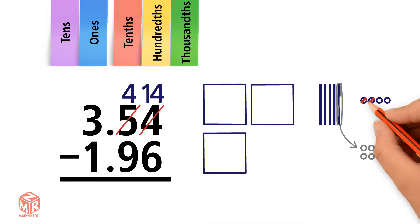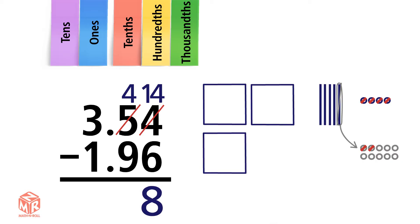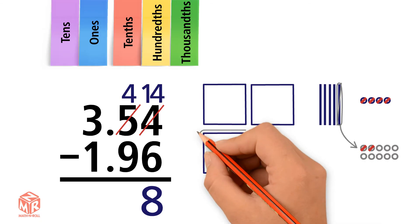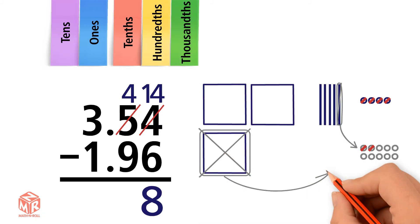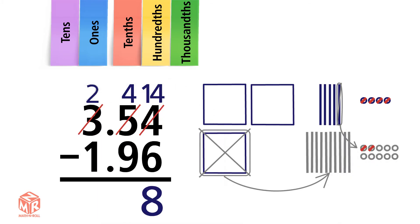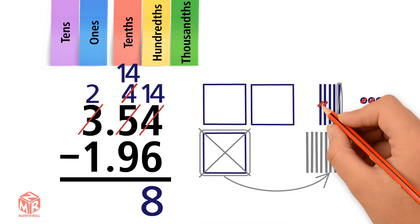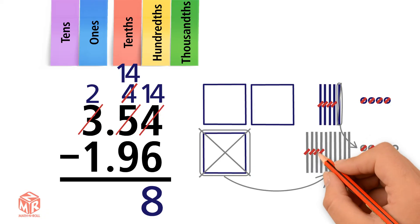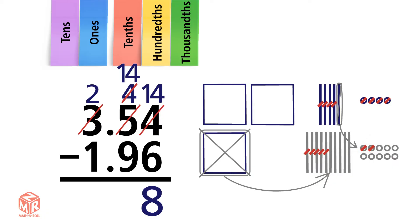Subtract the hundredths: 14 minus 6 equals 8, so we write an 8 in the hundredths column. Now we subtract the tenths. Can we subtract 9 from 4? No, so we have to regroup. We regroup 1 one to make 10 tenths. Now we have 2 ones and 14 tenths. Subtract the tenths: 14 minus 9 equals 5, so we write a 5 in the tenths column and we bring down the decimal point.